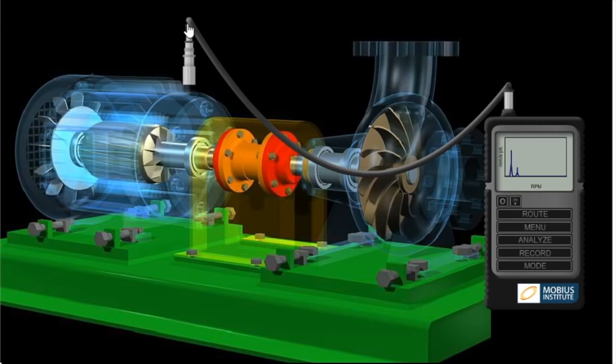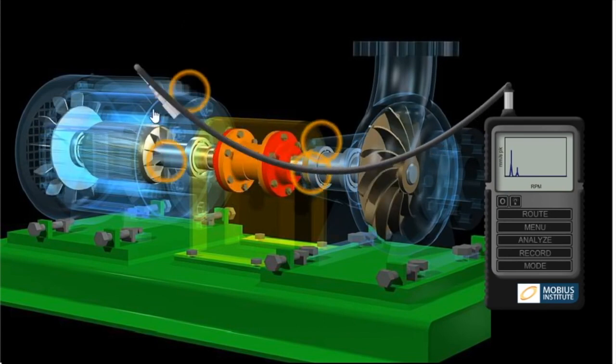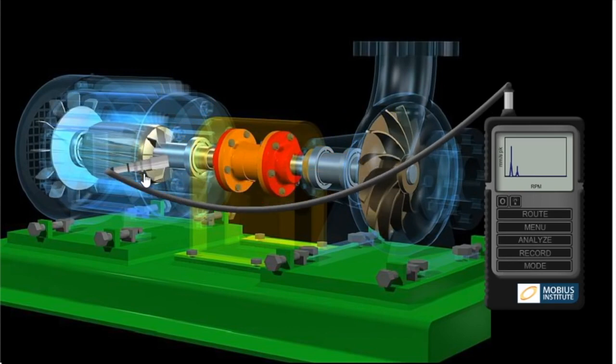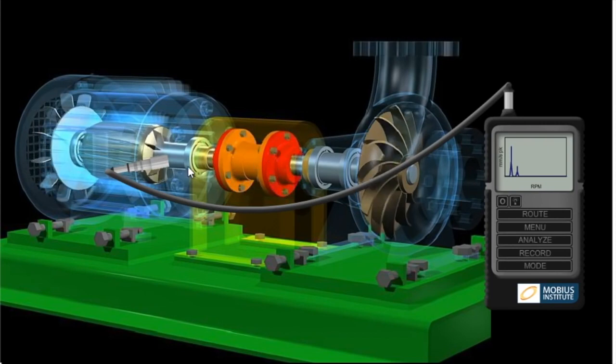But the fact is, when we mount it up on top, that is sensitive to the vertical motion. Whereas if I move it to the horizontal location, that is now much more sensitive to the horizontal motion. So for example, if it was rocking back and forward due to looseness or resonance, then the horizontal measurement will tell us about that.